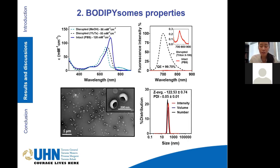These bodopisomes were found to have some very interesting properties. On the left-hand side, we can see the absorption spectrum, where the intact bodopisomes have an absorption at 700 nanometers. We can also see that there is an increase in absorptivity, and this phenomenon is known as J-aggregation. At the same time, these particles are highly fluorescently quenched, with a fluorescence quenching efficiency up to 99%.